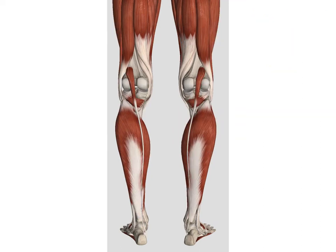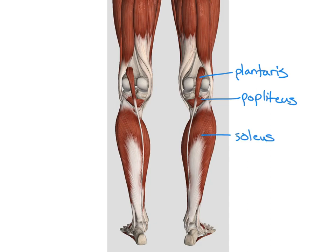The deeper view of the posterior side includes the plantaris, as well as the popliteus and our soleus. We can also follow the tendons down from the hamstring group. On the lateral side, we have our biceps femoris, with a long head on top and a short head underneath. And then we have our semitendinosis and our semimembranosis — semimembranosis being deep and medial, while semitendinosis is more superficial and lateral.